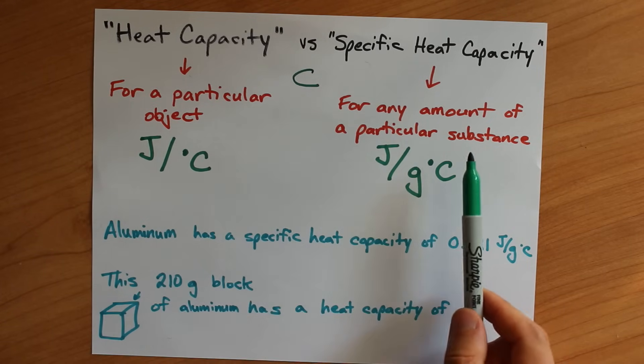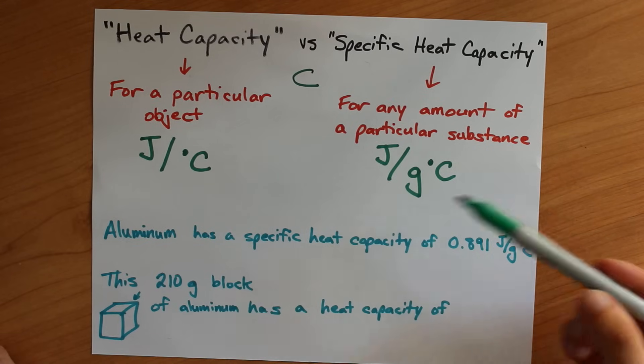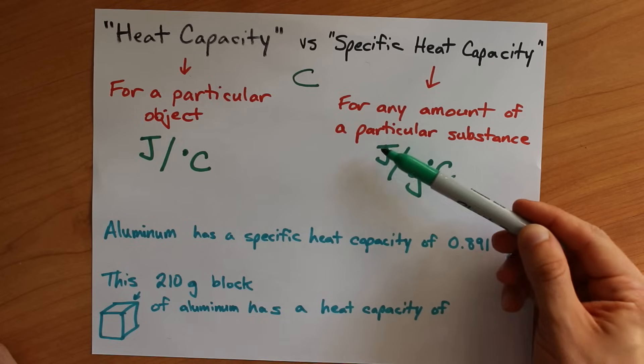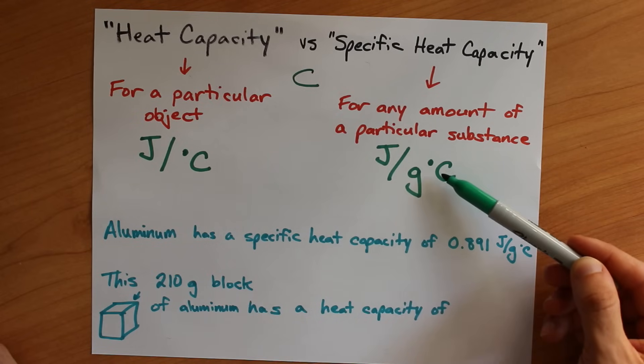The idea is that a specific heat capacity is for any amount of some substance, like water, is always 4.18, because that's the number of joules it takes to heat one gram by a degree Celsius.